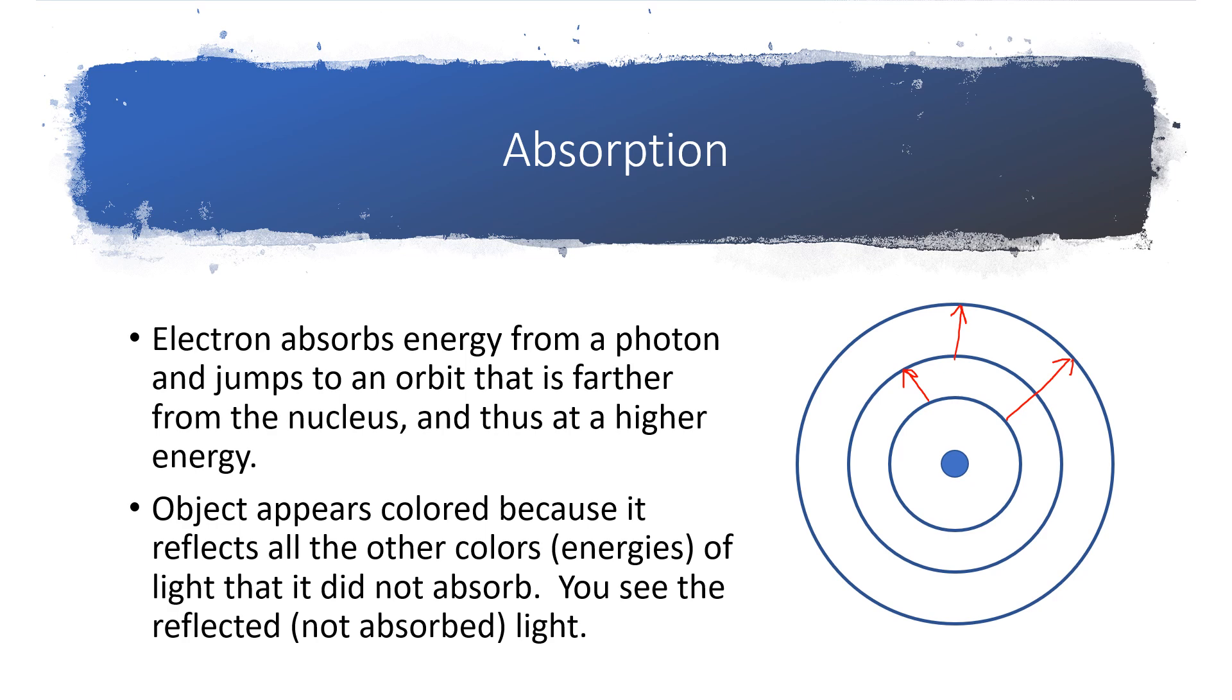In terms of day-to-day activities, any object that appears colored is appearing colored because it absorbed certain colors and reflected others. What you see are the reflected colors of light. The absorbed colors are missing.